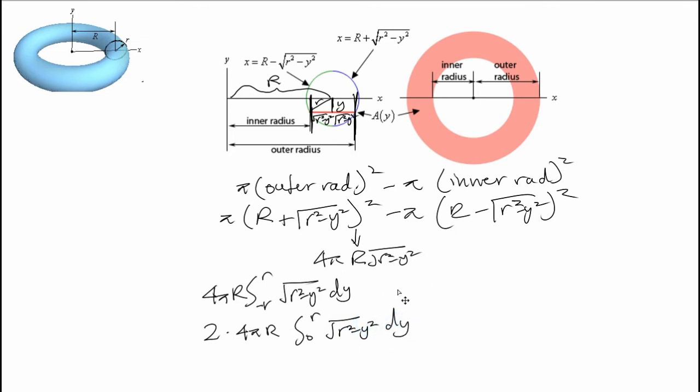All right. Now the hard part is this integration. Your first instinct may be to use trig substitution, which can get really icky really fast. But actually, if you notice, graphing this on the Cartesian plane actually gives you the equation for a circle. If you set this equal to x equals square root r squared minus y squared, and you graph that, you get a circle of radius r.